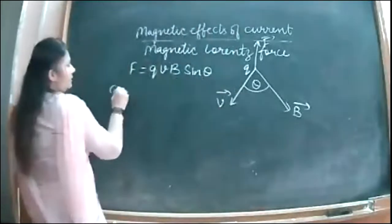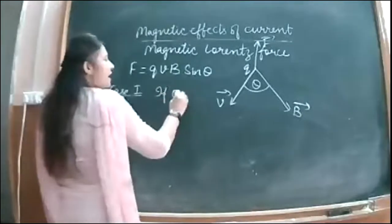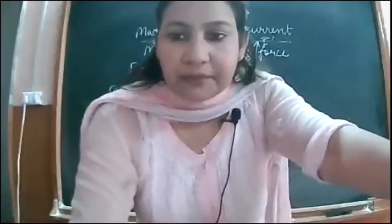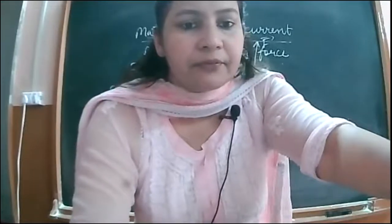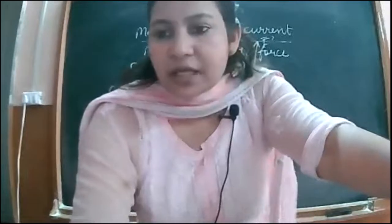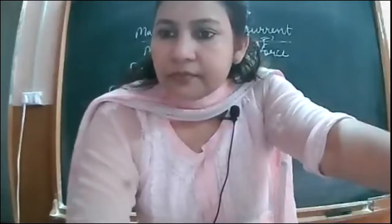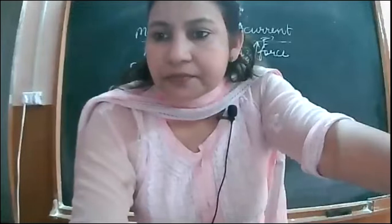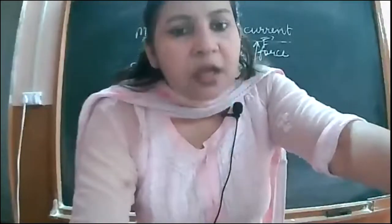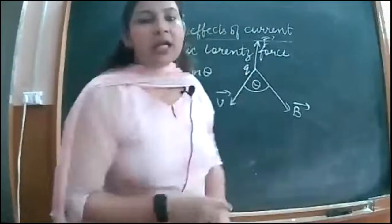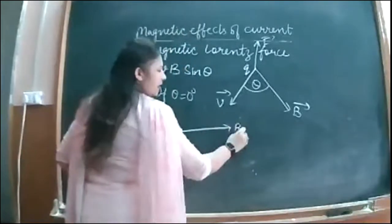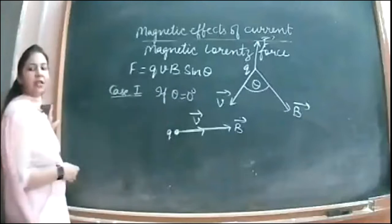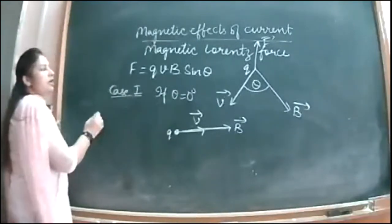Let us discuss Case 1: if theta is zero degrees. What does theta equal to zero degrees mean? It means the charge particle is moving in the direction of the magnetic field. Velocity and magnetic field are in the same direction, so theta is zero degrees. Putting it in the equation: F = qvB sin 0°.